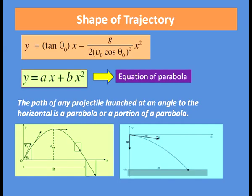The equation of trajectory is y = tan θ₀ · x − g/(2·V0² cos² θ₀) · x². We can write this as y = ax + bx², where a = tan θ₀ and b = −g/(2·V0² cos² θ₀). This equation y = ax + bx² is an equation of a parabola. Hence the shape of the trajectory is parabolic, and the path of any projectile launched at an angle to the horizontal is a parabola.